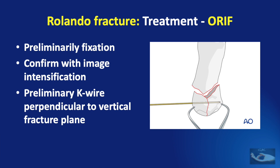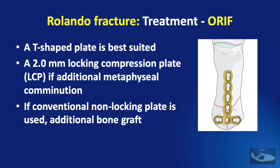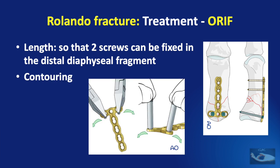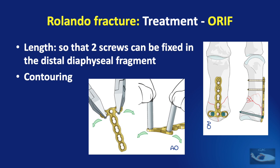After accessing the fracture, preliminary fixation of the articular fragments of the base of the thumb is done with pointed reduction forceps, confirmed under direct vision and with image intensification. A preliminary K-wire may be inserted perpendicularly to the vertical fracture plane to additionally stabilize the construct. For fixation, a T-shaped plate is best suited — specifically a 2.0 mm locking compression plate if additional metaphyseal comminution is noted. If a conventional non-locking plate is used, an additional bone graft will be required, harvested either from the radius or from the iliac crest. The plate length must allow at least two screws to be fixed in the distal diaphyseal fragment, and the plate must be contoured both transversely and longitudinally.